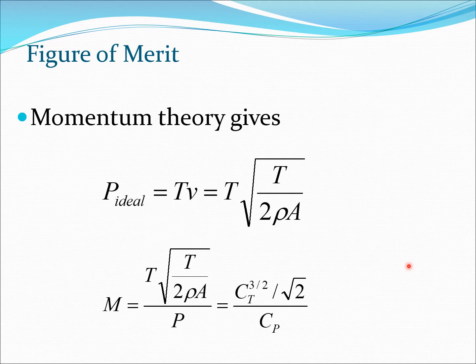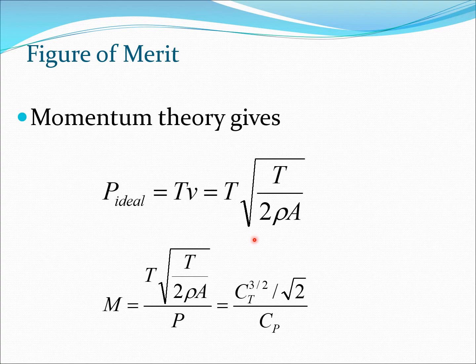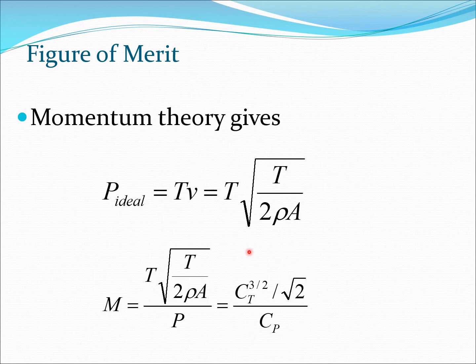Now let's get some equations into this metric. From momentum theory, the induced power is T times v — T into the induced velocity — which is the power required to hover. If we want to calculate the figure of merit, we divide this power by the actual power P. In non-dimensional form, the induced power is C_T^(3/2) / √2, which we derived in a previous lecture, and this is divided by C_P, the actual power coefficient. So this is the general formula for M.